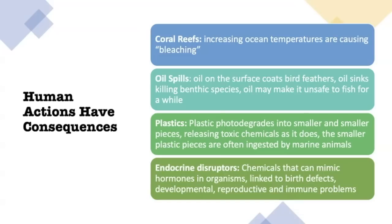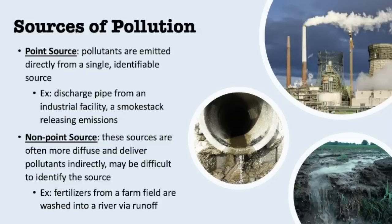The last thing to discuss in this introduction section is endocrine disruptors. These are chemicals known to disrupt the hormones in your body — they either compete with hormones, alter them, or cause problems that prevent hormones from doing their job within your cells. As a result, you might have birth defects, developmental or reproductive effects, or even problems with your immune system. Let's move on to specific types of pollution affecting aquatic and terrestrial habitats.